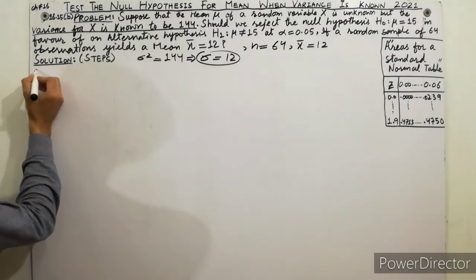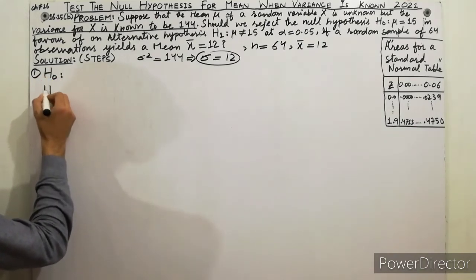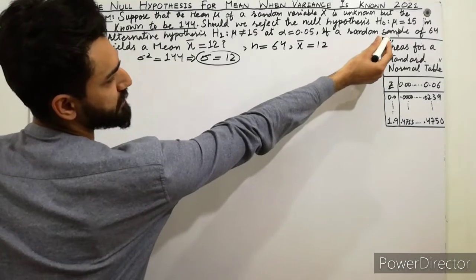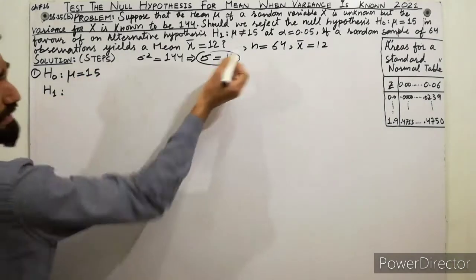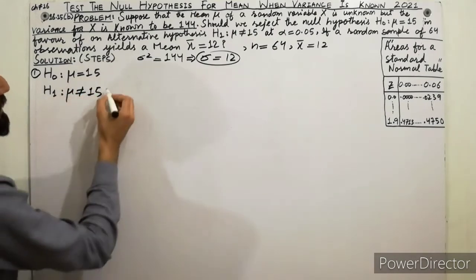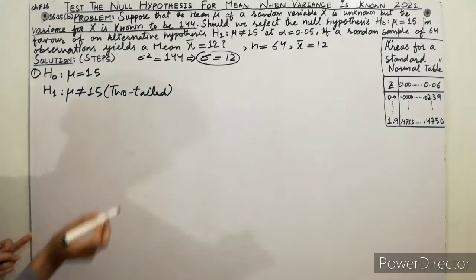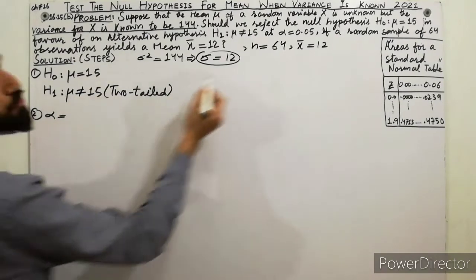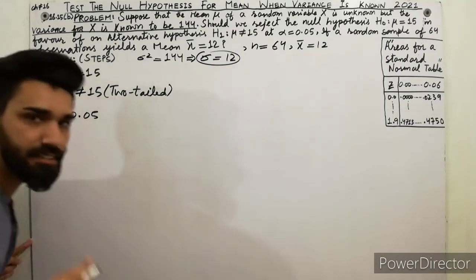Step one: state the null hypothesis and alternative hypothesis. Always remember this is always the first step. The null hypothesis is H0: mu equals 15, and the alternative hypothesis H1: mu does not equal 15 — this is the two-tailed test. Step two: alpha, the level of significance, is given as 0.05.